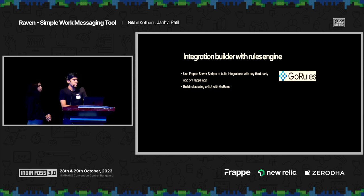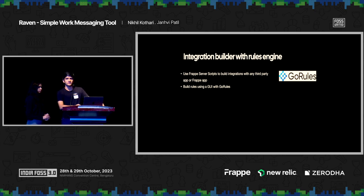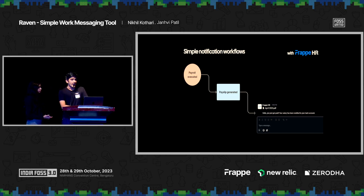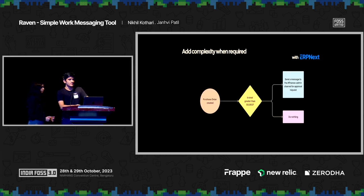We are also working on an integration builder. We're using Go Rules, which is an open source business rules engine. Frappe already does a lot of heavy lifting for us with server scripts, doc events, and more. Technically, you could build a workflow like: on Frappe HR, when payroll is executed and pay slips are generated, all employees get a message from the Frappe HR bot. The workflow itself would be built by the people using it — and they will not be programmers. That's our goal. You can also add complexity, like: if a purchase order is created and the total is greater than 50,000, trigger an action — and extend this to multiple layers using a decision table or decision tree with the rules engine.